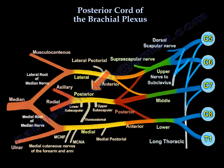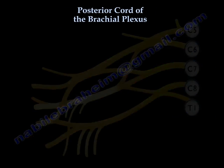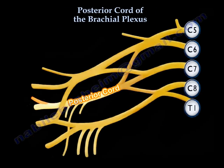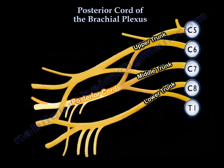The posterior cord of the brachial plexus is made up of the posterior division of all three trunks — the upper, the middle, and the lower trunk. It usually has fibers from C5 to C8. The presence of T1 fibers is variable.